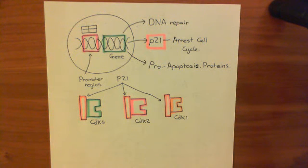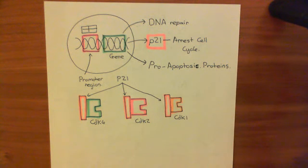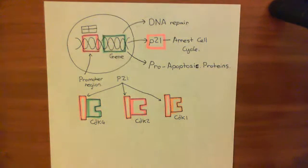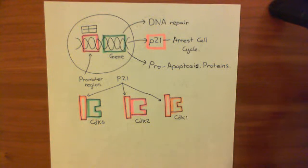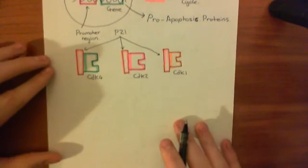If the DNA damage is so bad that the DNA repair mechanisms are not working, then P53 levels will be high for an extended period of time, and that will start causing the cell to commit suicide, because it's not going to get better if the DNA repair mechanisms have failed. In this video, what I want to talk about is how P21 blocks progression through the cell cycle, and in order to do that, we need to discuss the cell cycle and what happens at each stage.